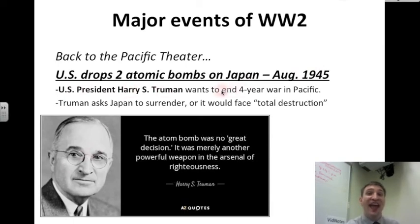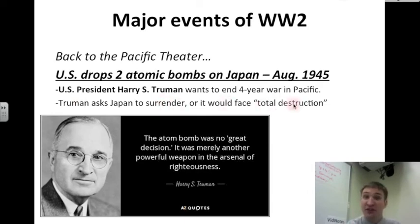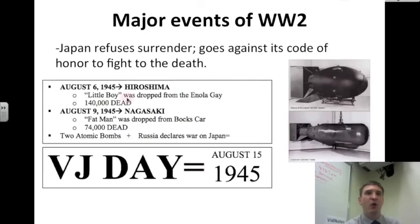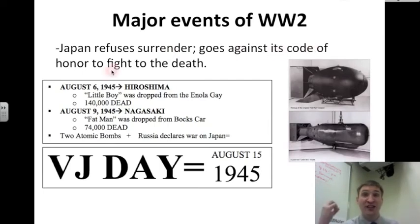Truman wants to end this four-year war in the Pacific — it is not coming to a close. He asks Japan and its leaders to surrender or it would face total destruction. He says, 'The atom bomb was no great decision. It was merely another powerful weapon in the arsenal of righteousness.' He seeks revenge against Japan, who is not surrendering. Why is Japan refusing to surrender? Because surrender goes against its code of honor to fight to the death — an old traditional samurai code.